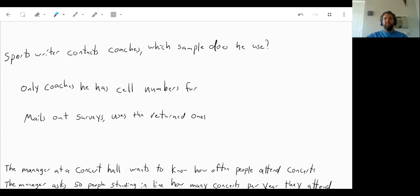Well, this is a convenient sample. Because if it's only the ones that he has cell phone numbers for, it's convenient for him as the sports writer. So it is a convenience sample.